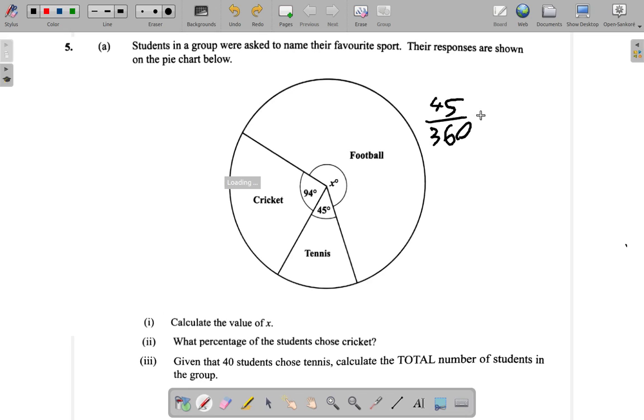Now, you have 40 students who play tennis. You must calculate the total number of students in the group.